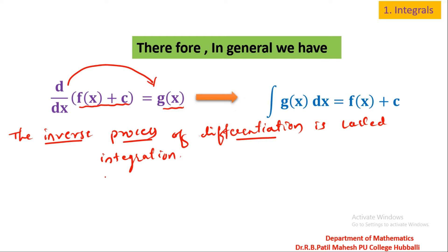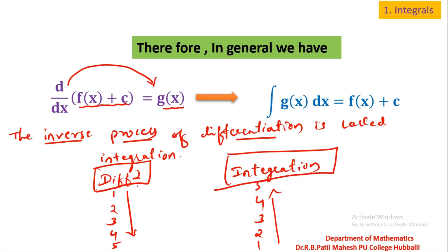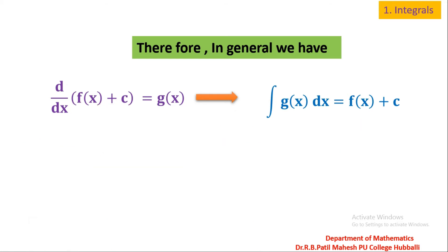I want to tell you one point here. Differentiation is something like saying the numbers one, two, three, four, five — from one to five is differentiation. Integration is calling the numbers in reverse: five, four, three, two, one. You can observe that integration is exactly the reverse of differentiation. A student should study integration only when they know differentiation properly, because unless you know the numbers forward, you cannot say them in reverse order.